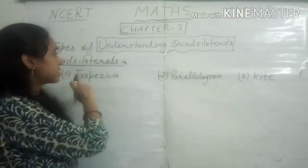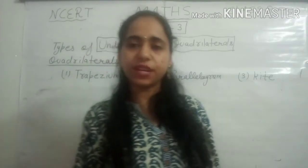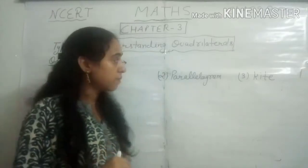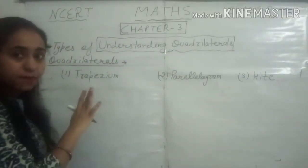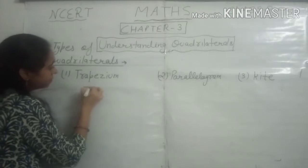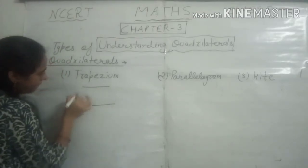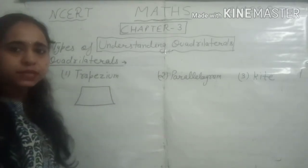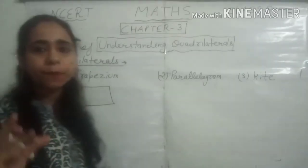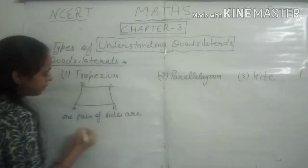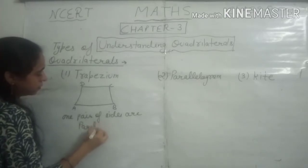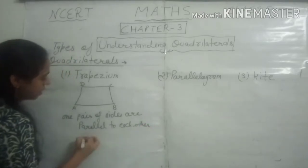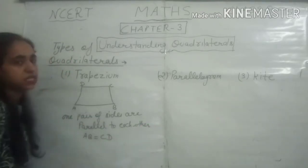Next we are going to discuss types of quadrilaterals. We will discuss three types: trapezium, parallelogram, and kite. A trapezium is a quadrilateral in which one pair of sides is parallel to each other — that is, AB is parallel to DC.